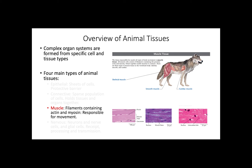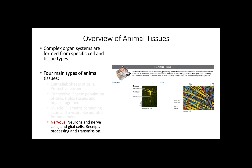The third type of tissue is muscle tissue, which in general consists of fibers containing actin and myosin, responsible for movement. The first subtype is skeletal muscle, responsible for voluntary movements. The second is smooth muscle, found in the digestive and urinary tracts, arteries, and other organs controlled by involuntary movement. And finally, cardiac muscle forms the contractile wall of the heart. The last type of tissue is nervous tissue, including neurons, nerve cells, and glial cells. Neurons and other nerve cells receive and transmit impulses to other cells, whereas glial cells help nourish, insulate, and replenish neurons.